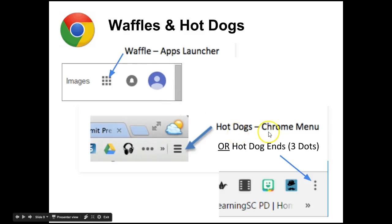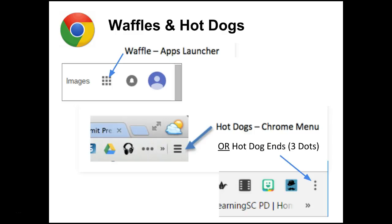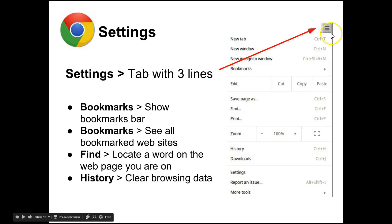Hot dog refers to the Chrome menu. With a recent update to Chrome it changed from three lines to three dots, so it's sometimes referred to as 'hot dog in,' but it lets you access the Chrome menu that takes you to your settings and downloads. You can also show your bookmarks bar, see all bookmarked websites, find and locate a word on a web page, or clear your browsing history.